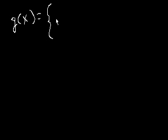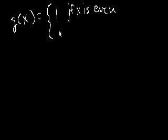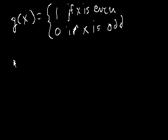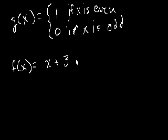Let's start off with an example not too different than what we saw before. Let's say that g of x is equal to 1 if x is even, and it equals 0 if x is odd.